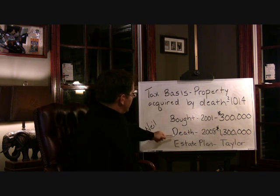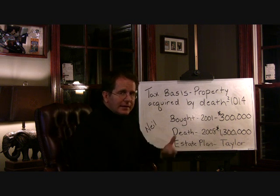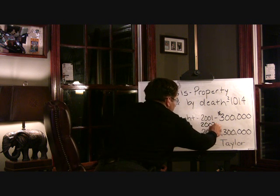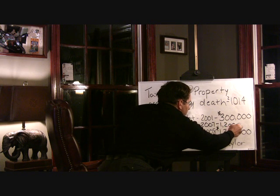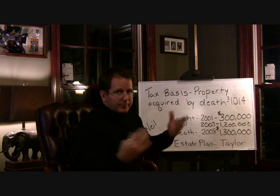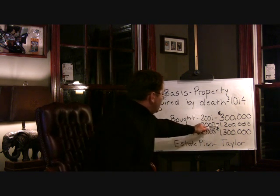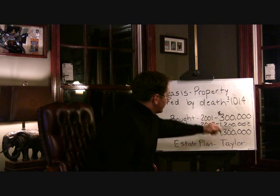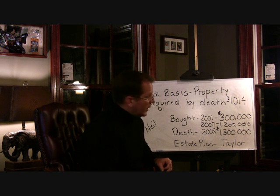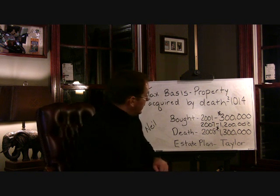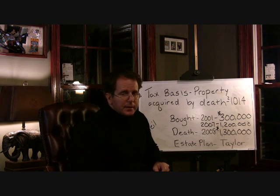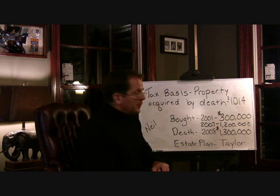Let's say the year before Neel passed away, he actually gave the property to Taylor in 2007, when it was valued at $1.2 million. Neel gave her property, so he'd have to file a gift tax return — he clearly gave her a gift worth $1.2 million, and his tax basis was $300,000. What would Taylor's tax basis in the property be? Well, pursuant to Section 1015 of the Code, Taylor's tax basis is not $1.2 million, but rather $300,000. There is no step-up in tax basis based upon a gift.